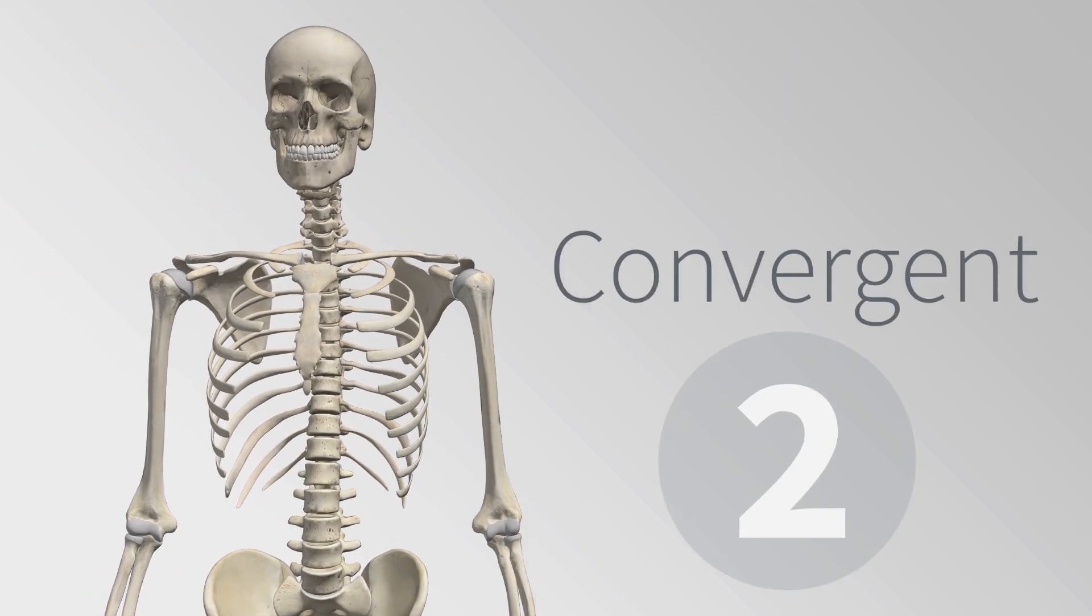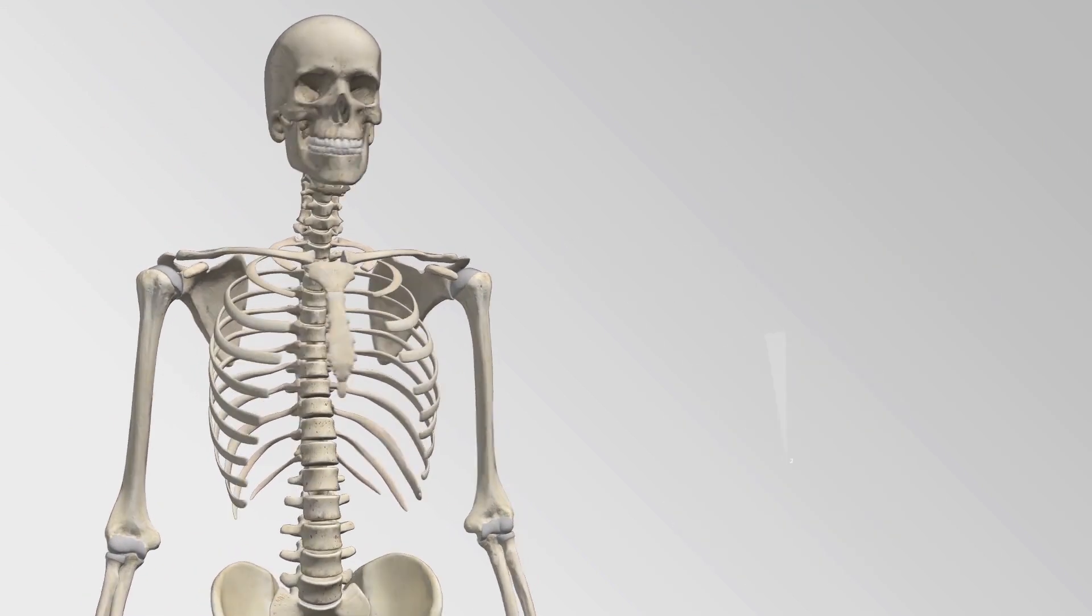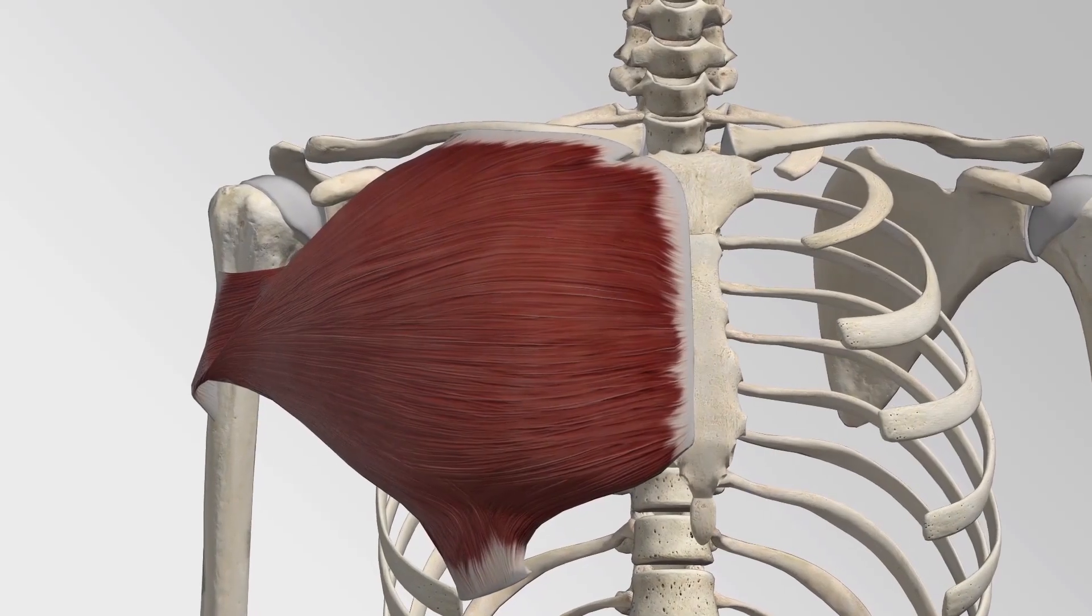Convergent muscles contain fibers that have a wide origin but converge in order to attach to a narrow tendon.